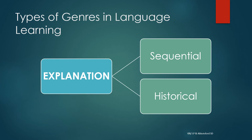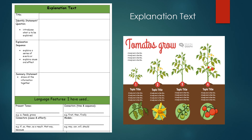Explanation text is when we explain why something happens or how something happens. There are two different kinds: sequential and historical. Some examples of explanation text include presentations, scientific articles, textbook flowcharts, and infographics. On the left you can see a graphic organizer for explanation text, and on the right is an infographic about tomatoes.